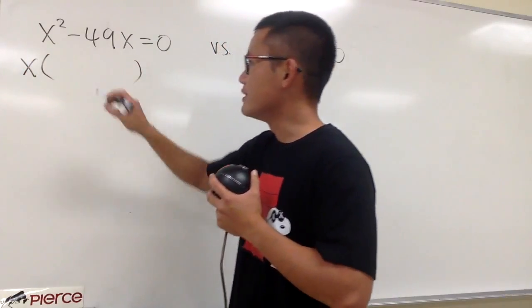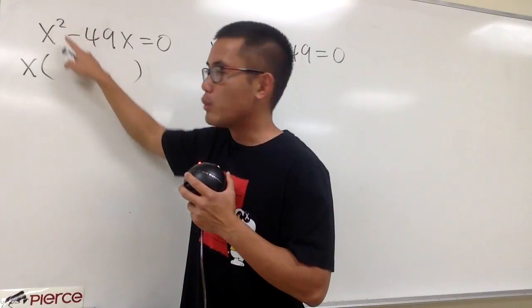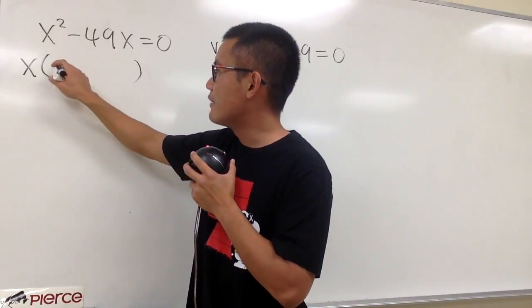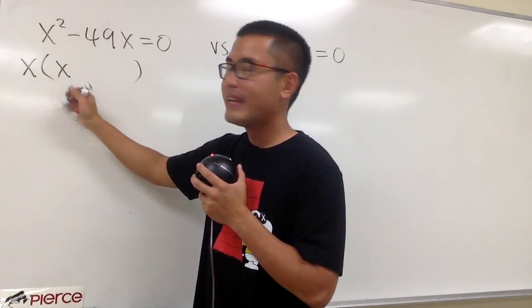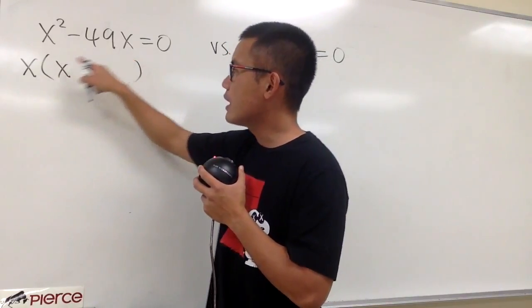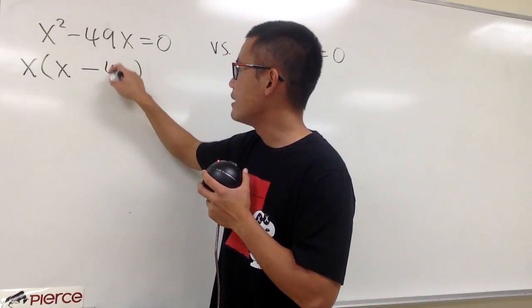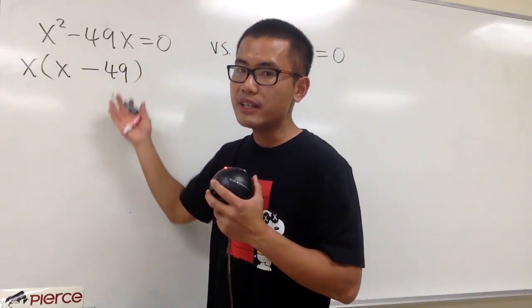Factor out the x and open the parentheses. This term, it was x squared, but we factored out the x, so that means we have an x left right here. And then, this was minus 49x, but we took out the x already. Therefore, the inside will be just minus 49, and that would be the factoring for that.